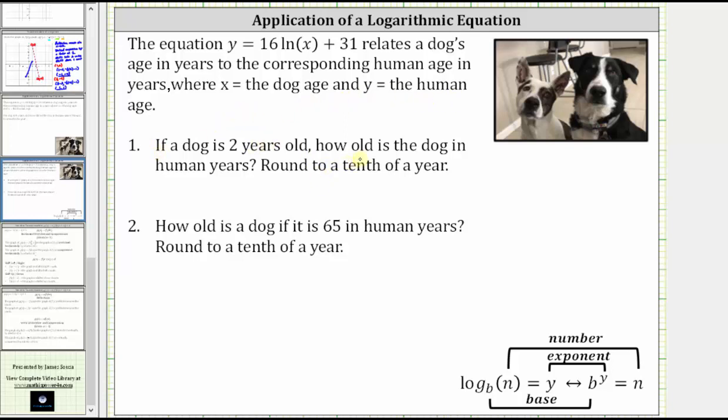Number one, if a dog is two years old, how old is the dog in human years? Round to a tenth of a year.